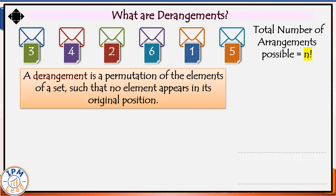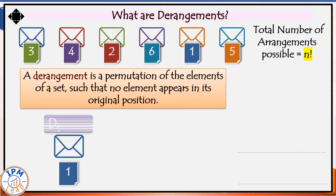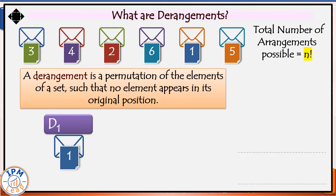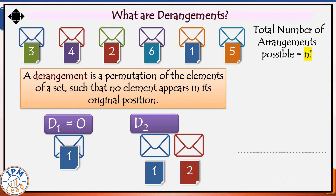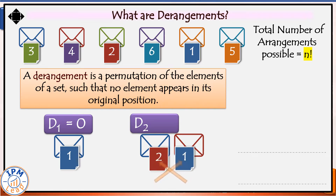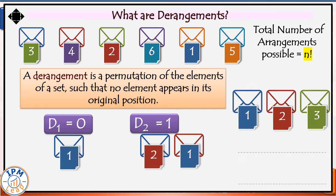Next, we need to know how many ways of deranging n objects exist. For a small number of objects this is quite simple. If we had just one letter and one corresponding envelope, the only way of placing this letter is into this envelope — no derangement is possible. So D1, the number of derangements for one object, is zero. Now if we had two letters and two envelopes, we can simply swap the two letters so neither occupies their original envelope. So only one derangement is possible and D2 equals one.